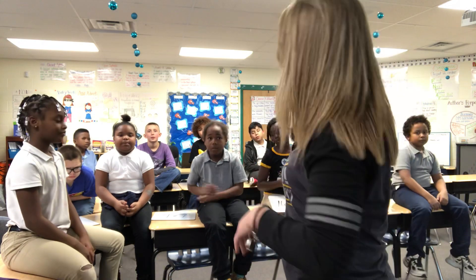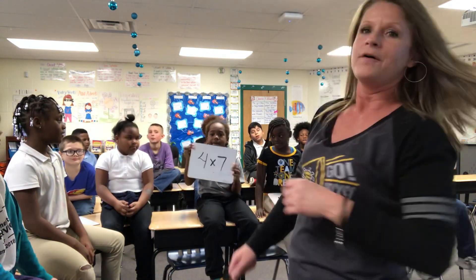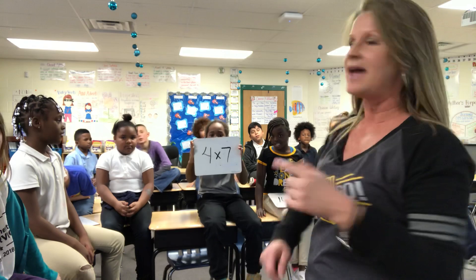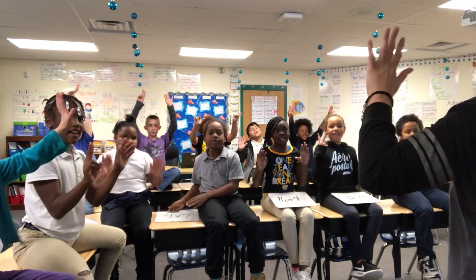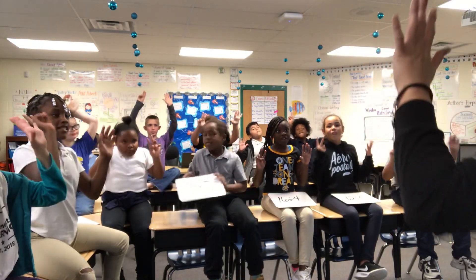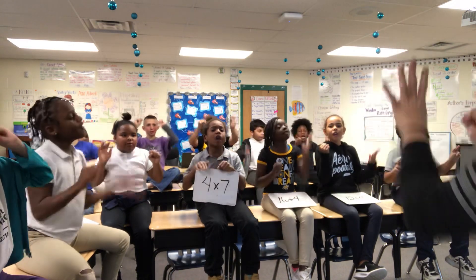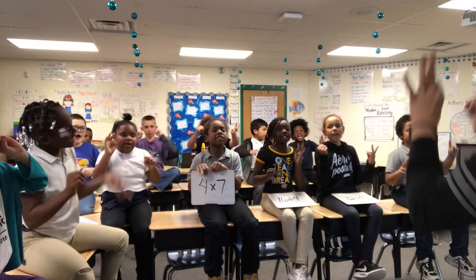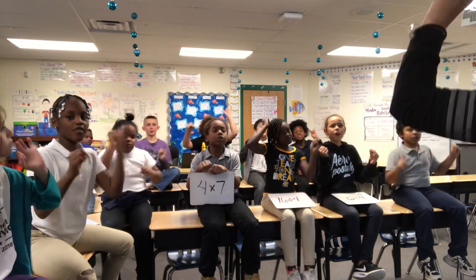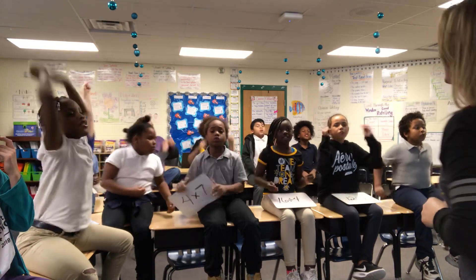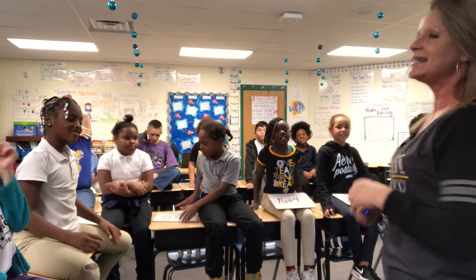Now let's try another one. If you want to do 4 times 7, you hold up 7! And you count by 4! Ready, go! 4, 8, 12, 16, 20, 24, 28! What's 4 times 7? 28! Nicely done!